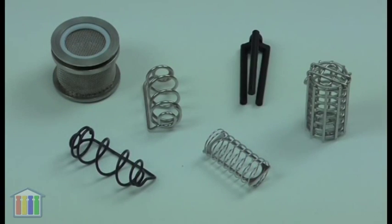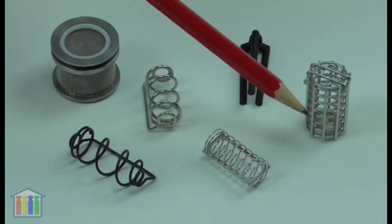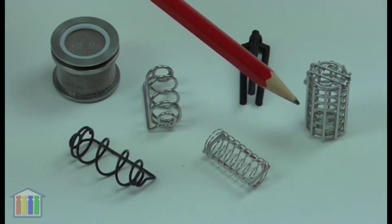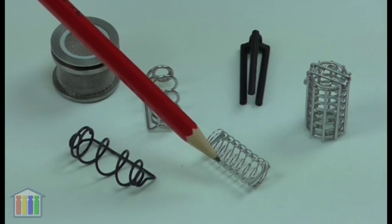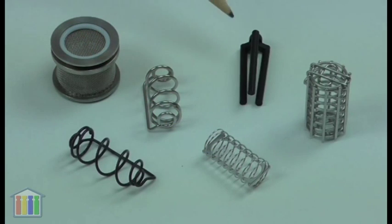Here we've got the six most common types of sinkers used in dissolution. This one is the Japanese basket and is referenced in the USP. This one is called a Sotac style sinker, a three prong sinker, a basket sinker, and two types of spiral sinker.